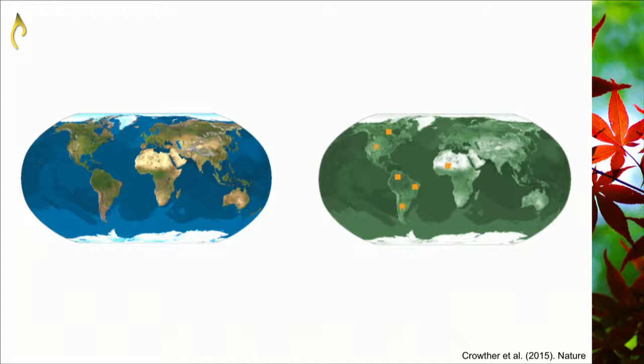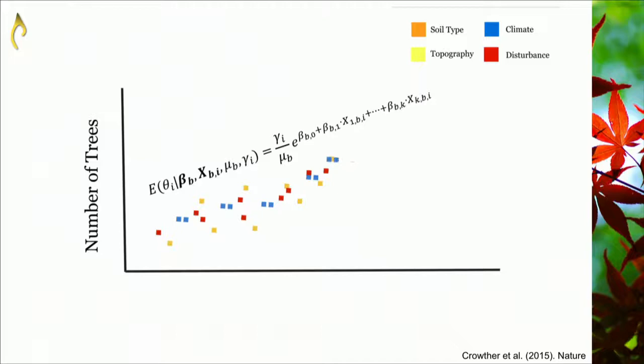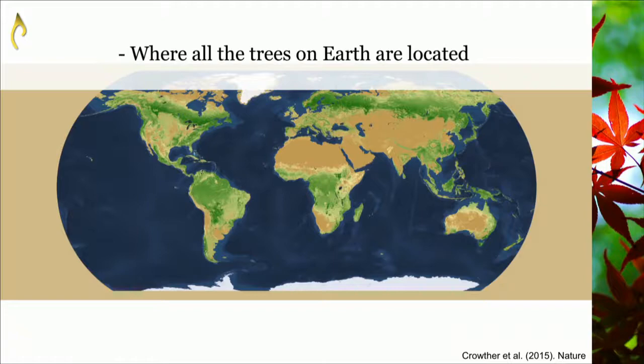With help from scientists all over the globe, they collected thousands of ground-sourced tree density measurements in hectare-sized plots. They paired tree density in each plot with satellite images of forest cover, and integrated information about soil type, topography, climate, and human disturbance. Using all of this, they constructed predictive equations to estimate how many trees are likely to exist in any given area based on its similarity to environments with known tree numbers. The resulting map is the first of its kind, revealing not only where all the trees on Earth are located, but also the density and environmental structure of the world's forests.